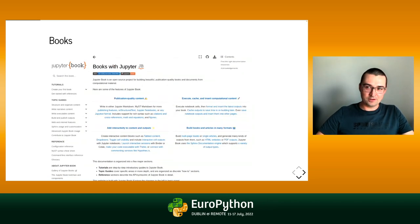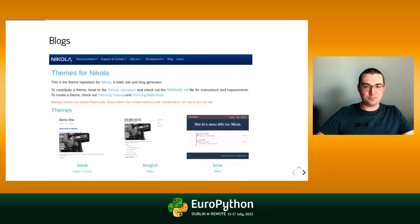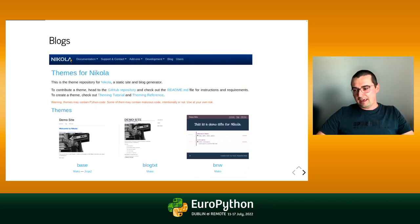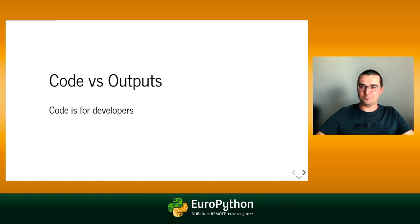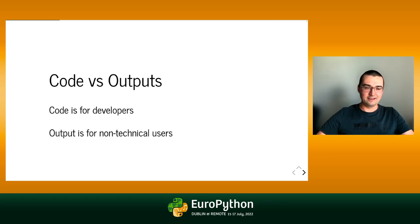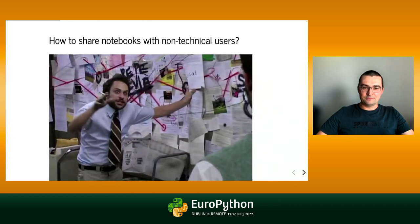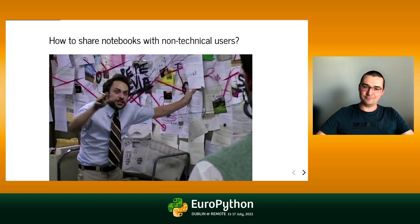You can create books with Jupyter using the Jupyter Book project, and you can write blogs with Jupyter using the Nikola package. You can ask yourself: what is the most important part of the notebook? For developers it is the code, and for non-technical users it is the output. I have a feeling that Jupyter notebook was not created for sharing results.